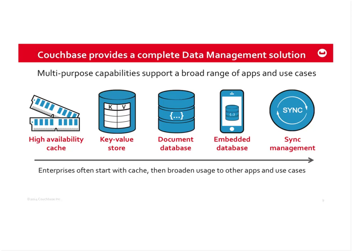Couchbase Mobile has two components: an embedded database that can run on mobile apps for Android, iOS, Windows, or even devices running Linux and Java. You have a local native database that you read and write to. Then there's the Sync Gateway, which is the bridge between Couchbase Server in your data center or the cloud, and Couchbase Lite sitting on your mobile device — a complete stack from one end of the spectrum to the other.